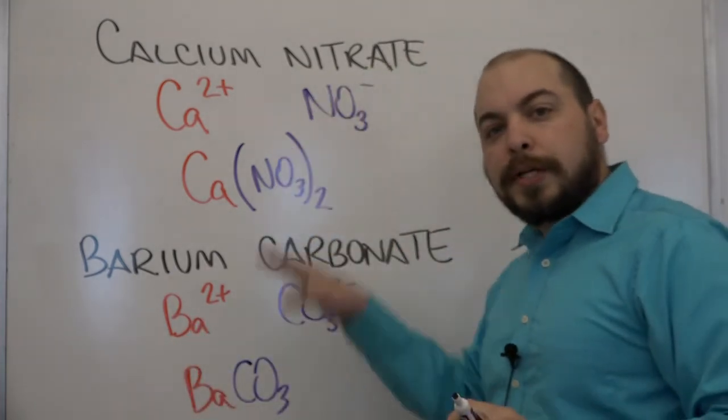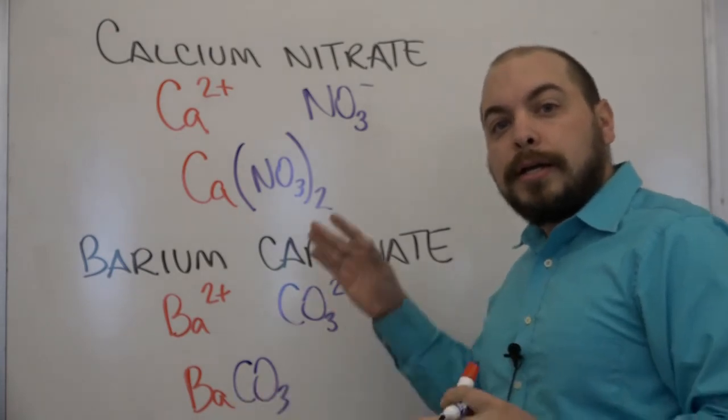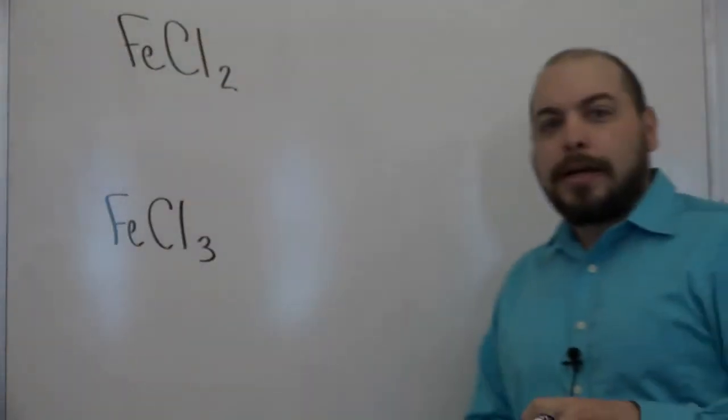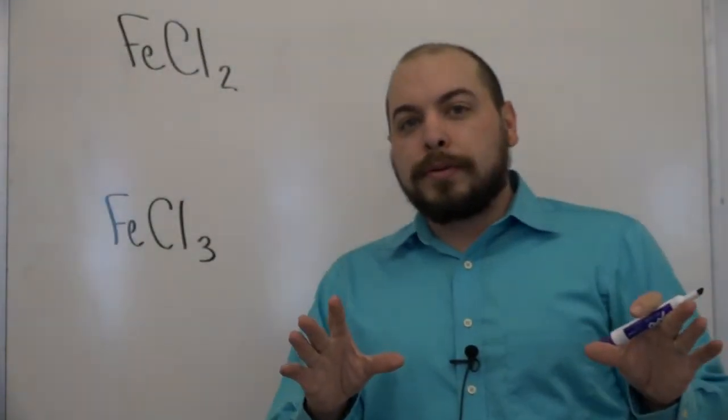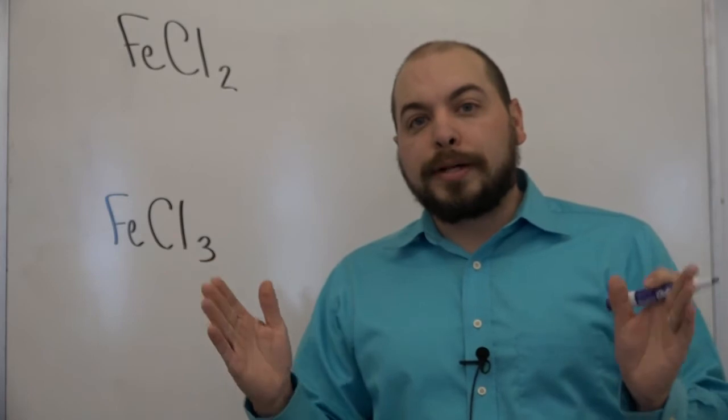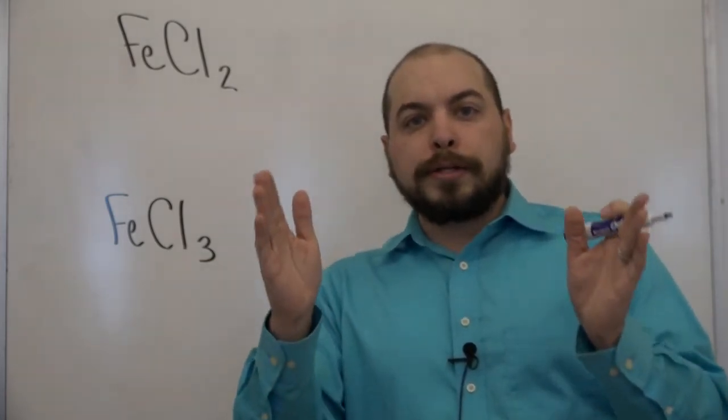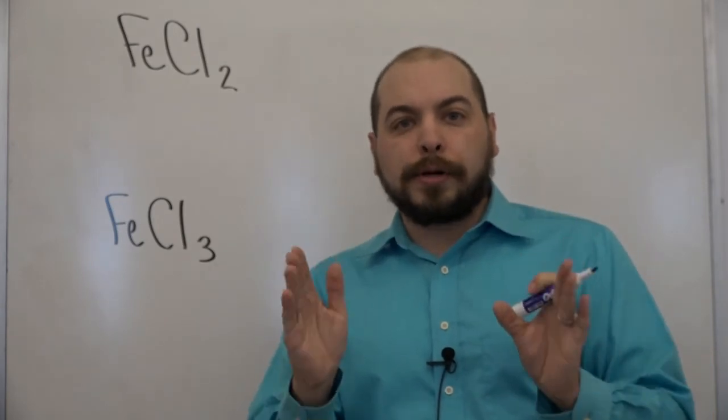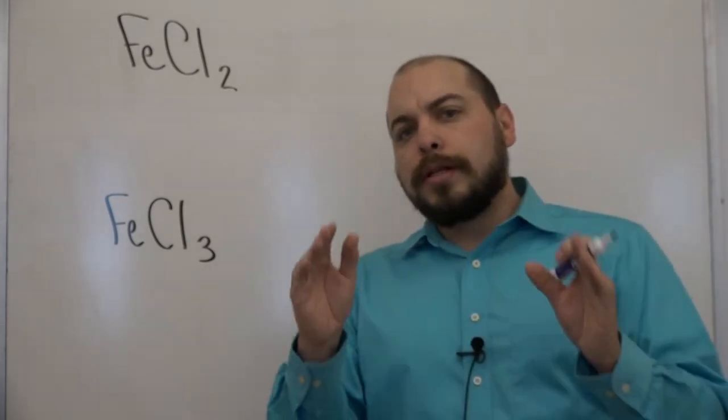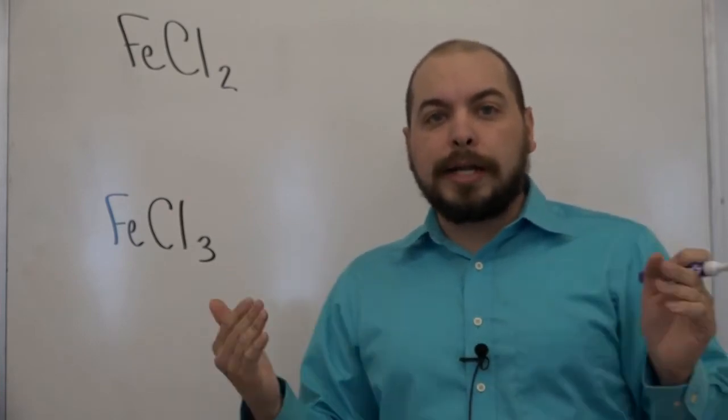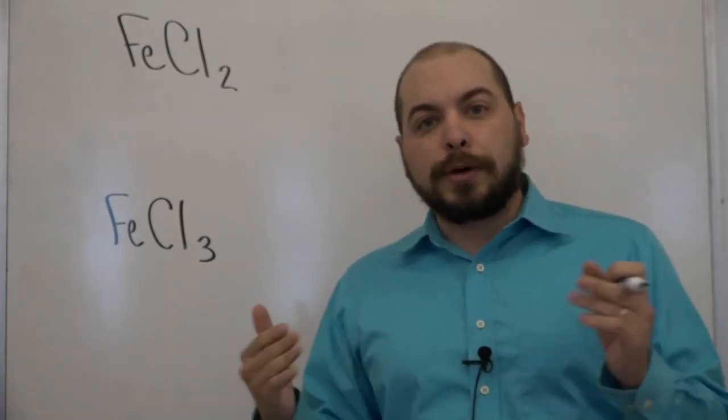So here are some special cases in terms of your polyatomic ion in terms of the name to formula. Now let's talk about the special cases of transition metals. Now transition metals if you remember from unit zero are those metals that are found within the D sub level of the periodic table. The interesting thing about these is they can actually have variable oxidation states or variable charges in their ionic forms.